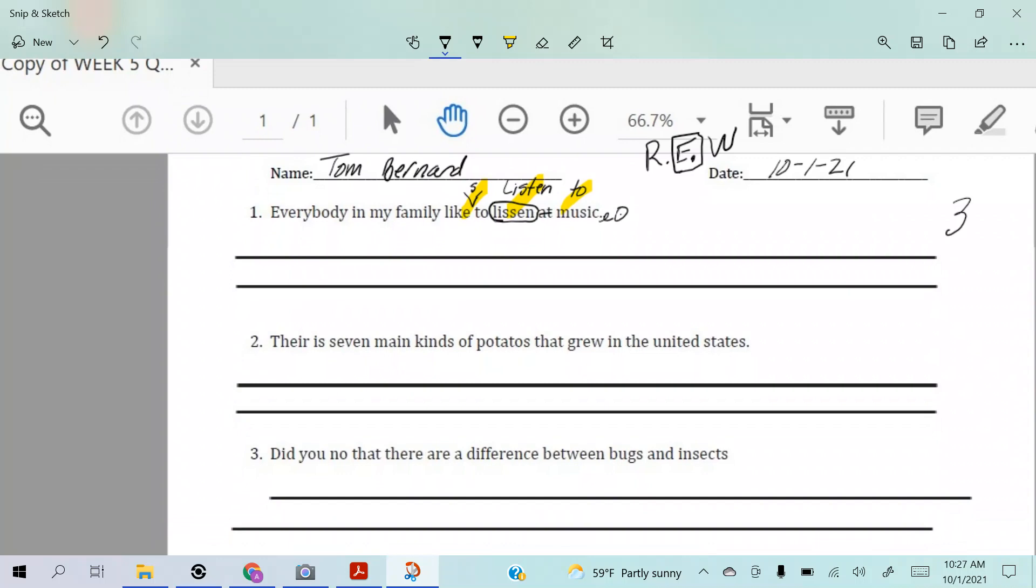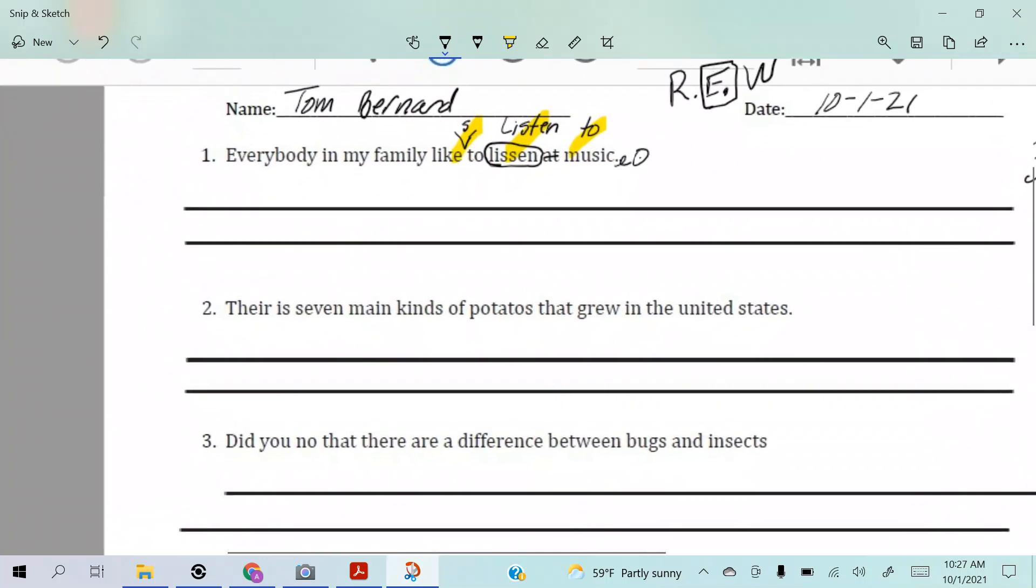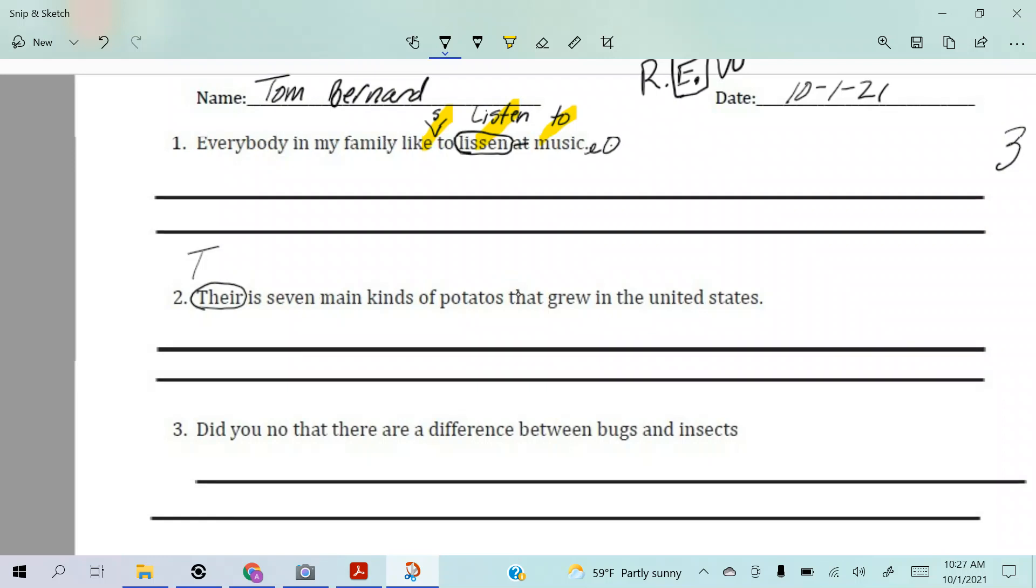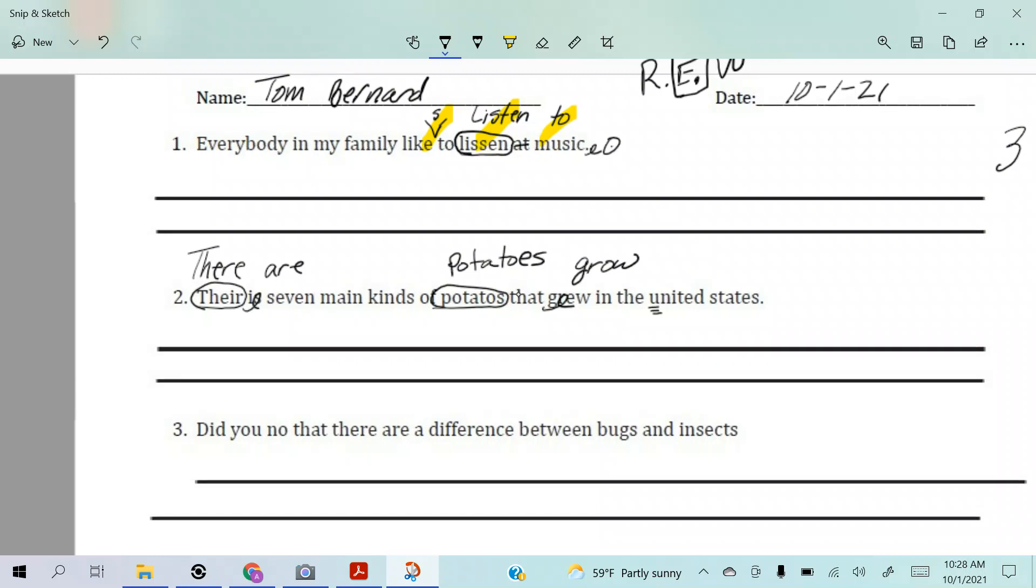First of all, starting with this one - wrong form of there. Seven - we got a spelling error here. No, that grew, that's past tense. We want present tense, and then we better be capitalizing that.